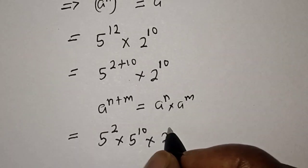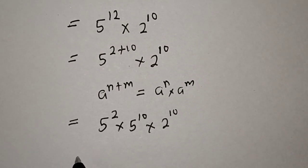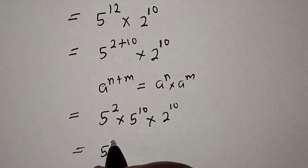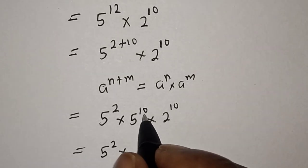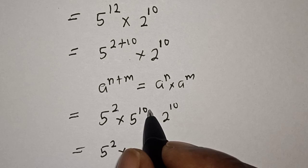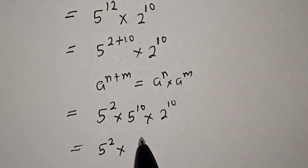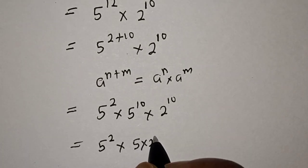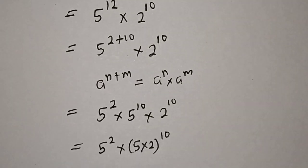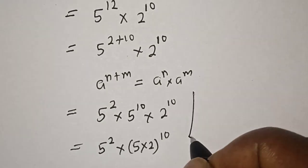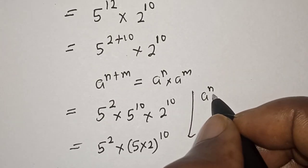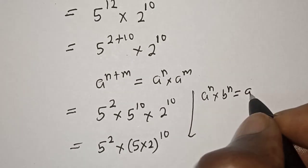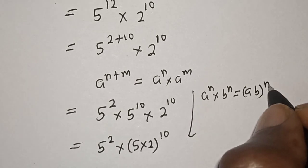...multiplied by 2 raised to power 10. Here we have 5 raised to power 2 multiplied by — these have the same power — 5 raised to power 10 multiplied by 2 raised to power 10. This becomes 5 times 2 raised to the power of 10. That is, from the exponential rule: A raised to the power of N multiplied by B raised to the power of N is equal to AB raised to the power of N.